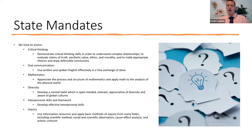Here are the state mandates, pulled directly from the assessment manual. We have to assess critical thinking, defined as students demonstrating critical thinking skills in order to understand complex relationships, evaluate claims of truth, aesthetic value, ethics, and morality, and to make appropriate choices and draw defensible conclusions. This is what the state wants us to look at, so we have created a rubric for critical thinking.